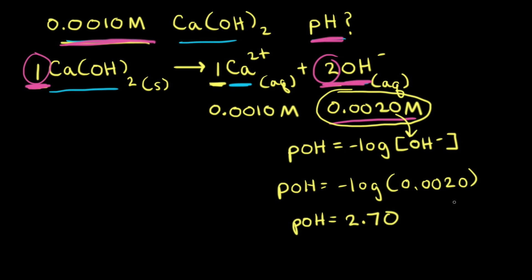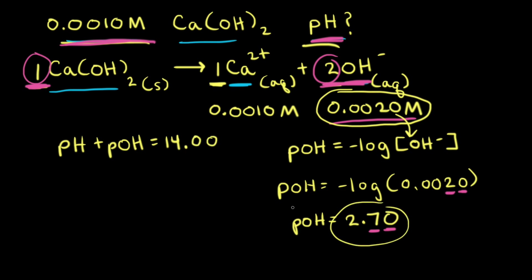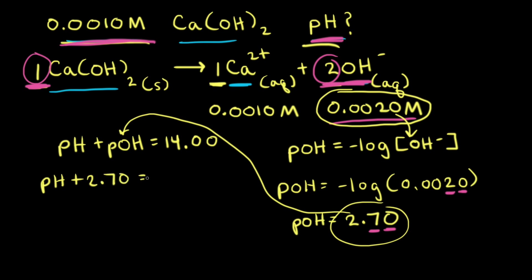Notice: since we have two significant figures for the concentration, we need two decimal places for our pOH. To find the pH, we know that pH plus pOH is equal to 14.00 at 25 degrees Celsius. Plugging in the pOH of 2.70 gives us pH plus 2.70 equals 14.00, so the pH of the solution is equal to 11.30.